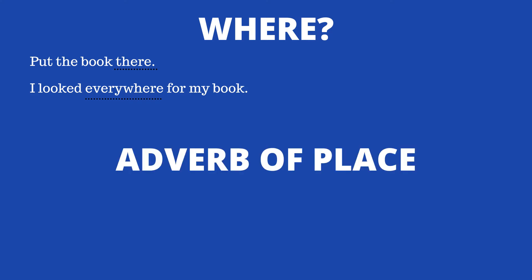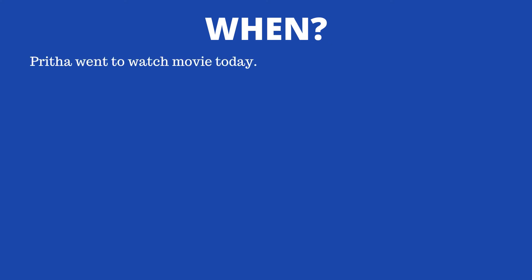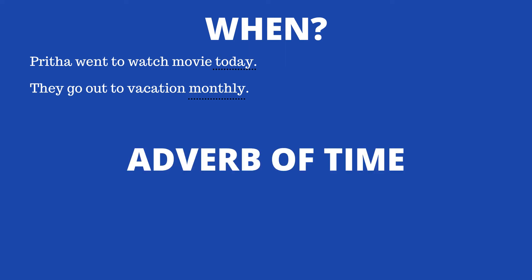Now for 'when': 'Pritha went to watch a movie today.' When did Pritha go? She went today. Another example: 'They go out for vacation monthly.' When do they go? They go monthly. Since these adverbs describe when exactly the action happened, they are called adverbs of time.